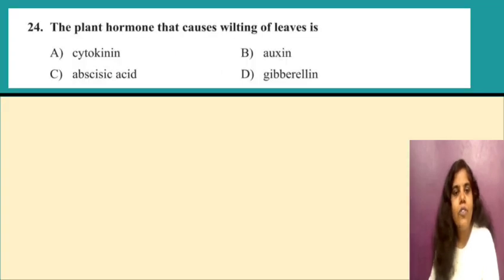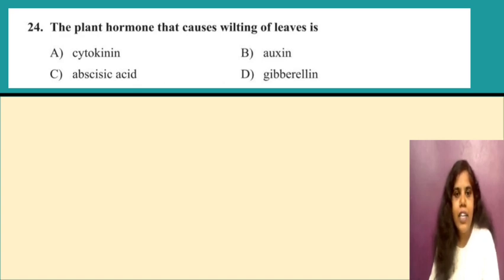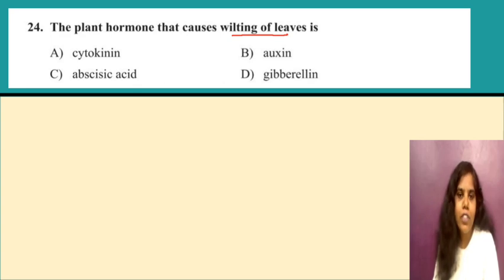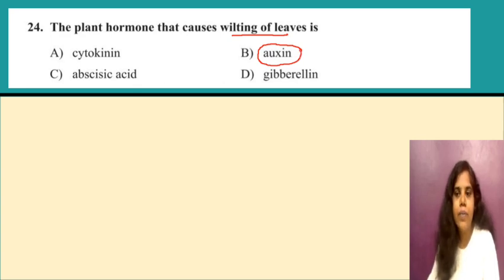Question 24: four multiple choice questions are given. The first one — the plant hormone that causes wilting of leaves. Wilting of leaves is nothing but falling of the leaves. The hormone that helps in wilting of the leaf — the answer is auxin. So option B will be the correct one.